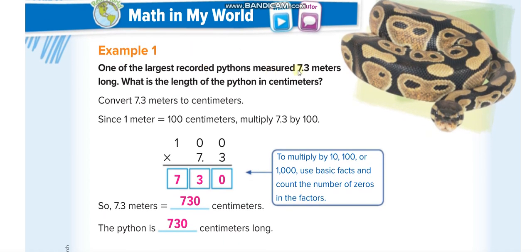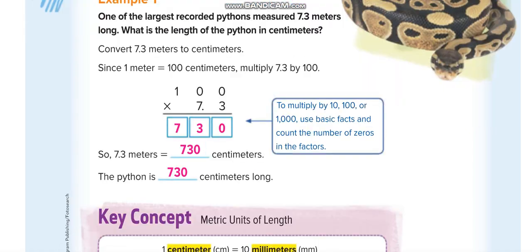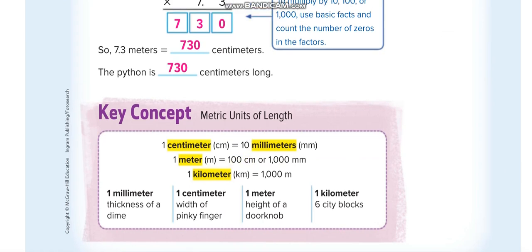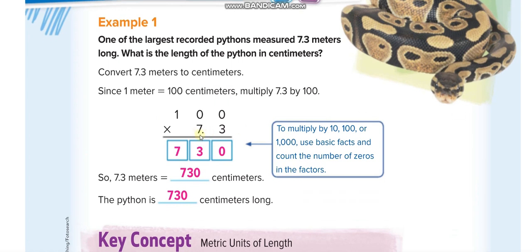Here, one of the largest recorded pythons measured 7.3 meters long. What is the length of the python in centimeters? We have to convert 7.3 meters into centimeters. One meter is 100 centimeters, so we do 7.3 times 100.